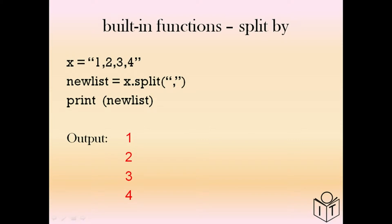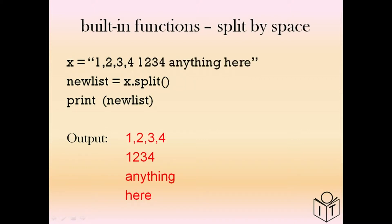Here we have a string '1,2,3,4' separated by commas. We can split that, and because it's split into parts it goes into something called a list. If we print that list, you'll see the parts of the string in between the commas — so 1, 2, 3 and 4. If we don't use anything inside split, it will split by the spaces, separating words as well.